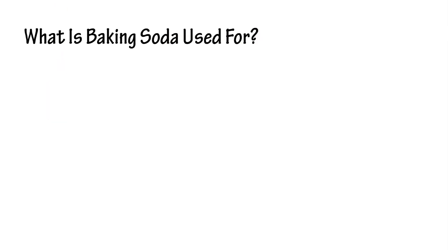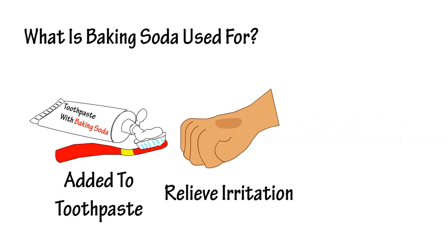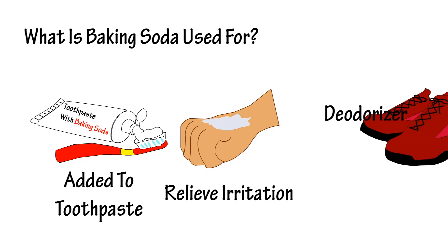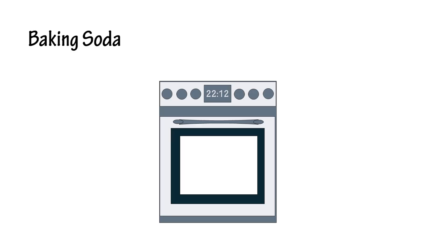So what is baking soda used for? It has many uses. It is added to toothpaste to help remove plaque and deodorize your teeth. Some people use it as a topical paste to relieve irritation from insect bites and stings. It is also used as a deodorizer. Baking soda has many other uses, including being used in cooking.